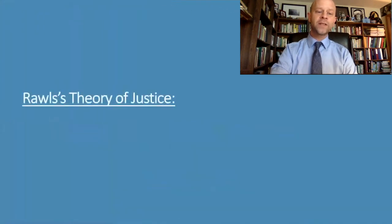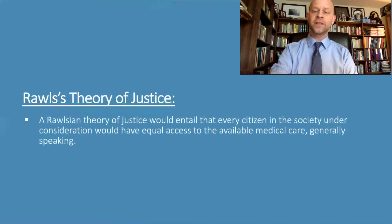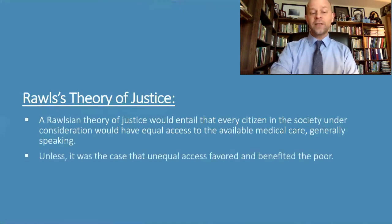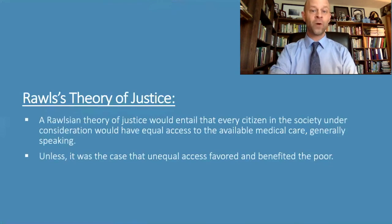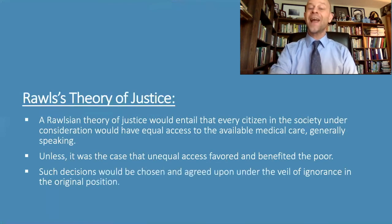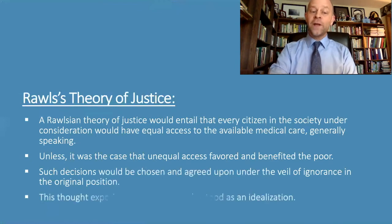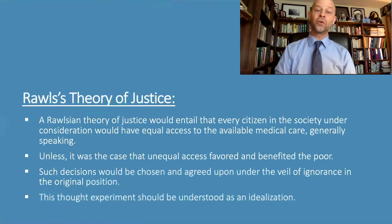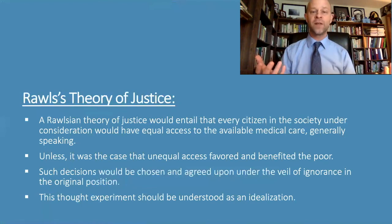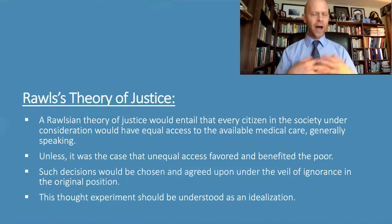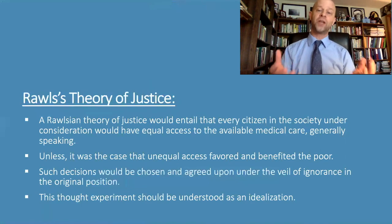According to a Rawlsian theory of justice, justice would entail that every citizen in the society would have equal access to available medical care, unless unequal access favored benefiting the poor. This follows from the original position thought experiment, and such decisions would be chosen and agreed upon under the veil of ignorance. It's important to emphasize that this is a thought experiment — an idealization we use to work back from when trying to consider what justice actually is. Rawls did not think this was any kind of actuality.